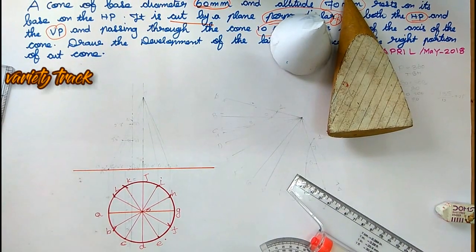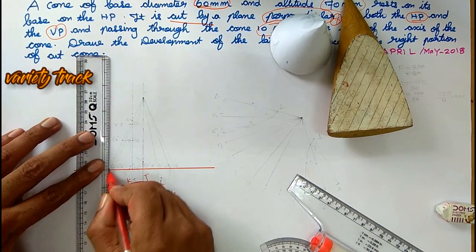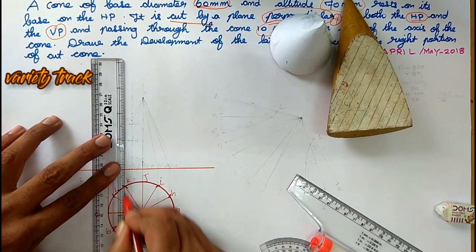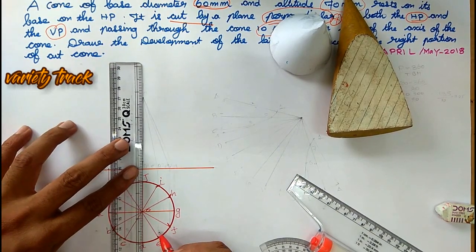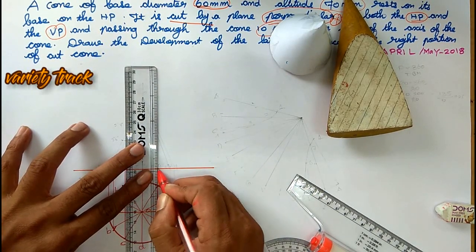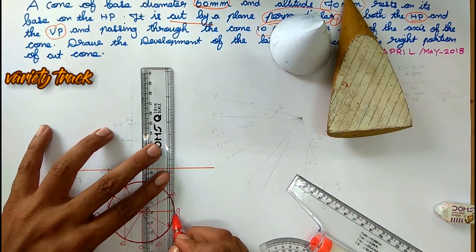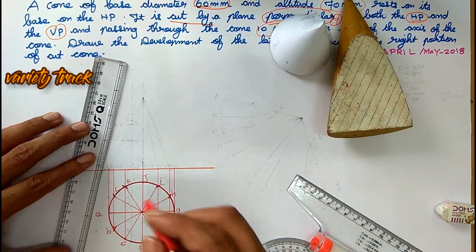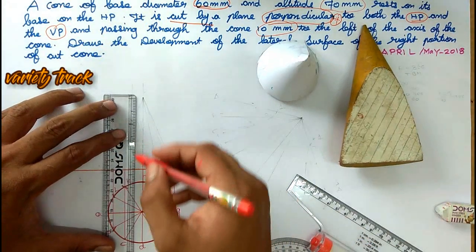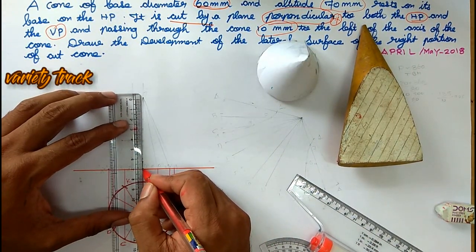So now we have the front view. We have to trace it — this is 2 points, then we trace it. This is the midpoint, we trace it. So this front view is fresh. The altitude will be 70, so I am going to mark 70.